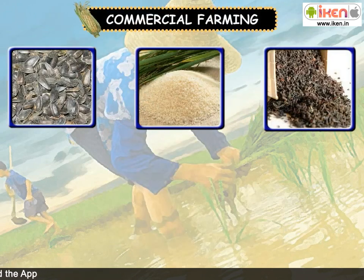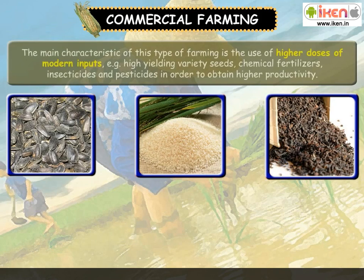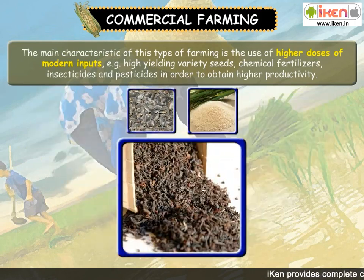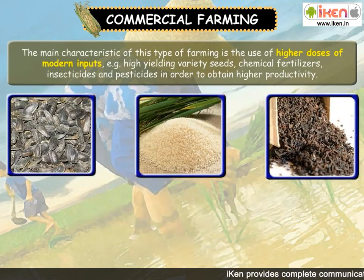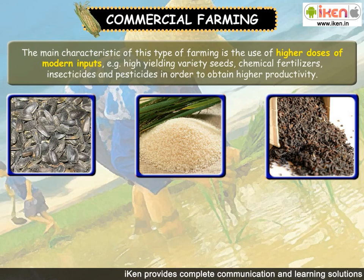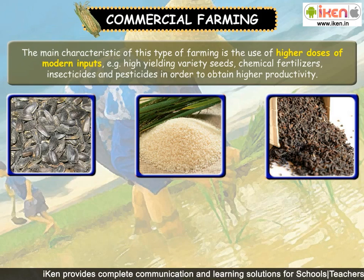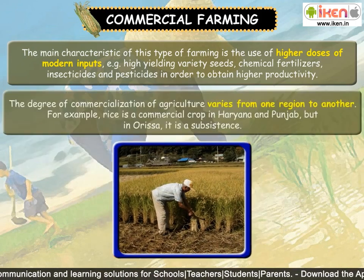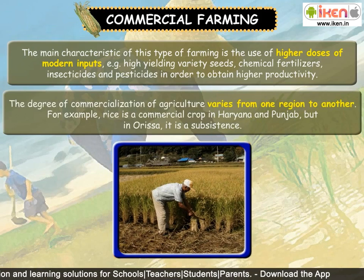Commercial farming: The main characteristic of this type of farming is the use of higher doses of modern inputs — for example, high yielding variety seeds, chemical fertilizers, insecticides and pesticides — in order to obtain higher productivity. The degree of commercialization of agriculture varies from one region to another.